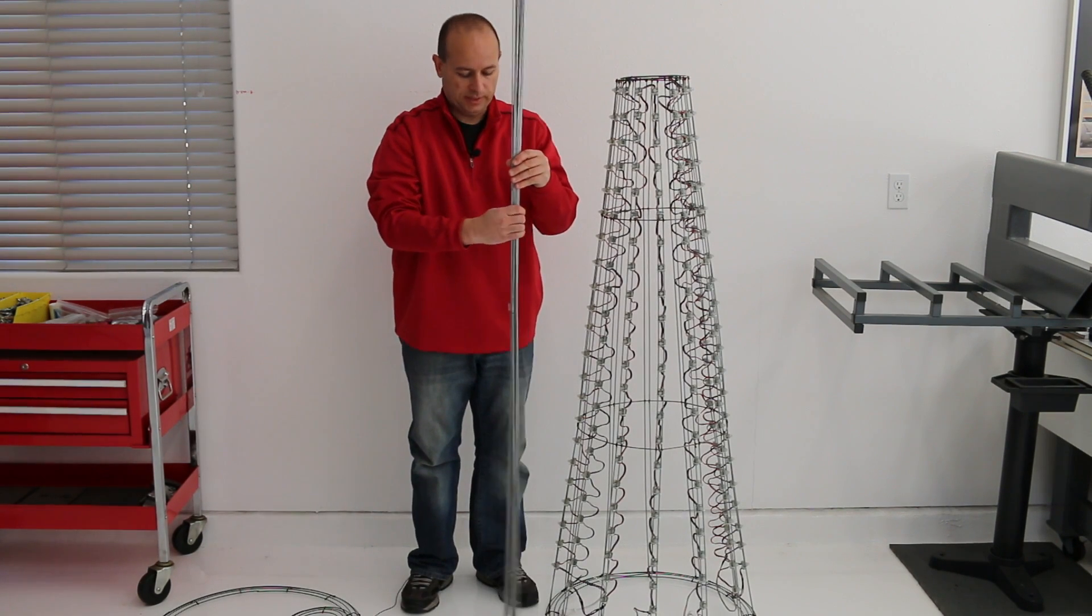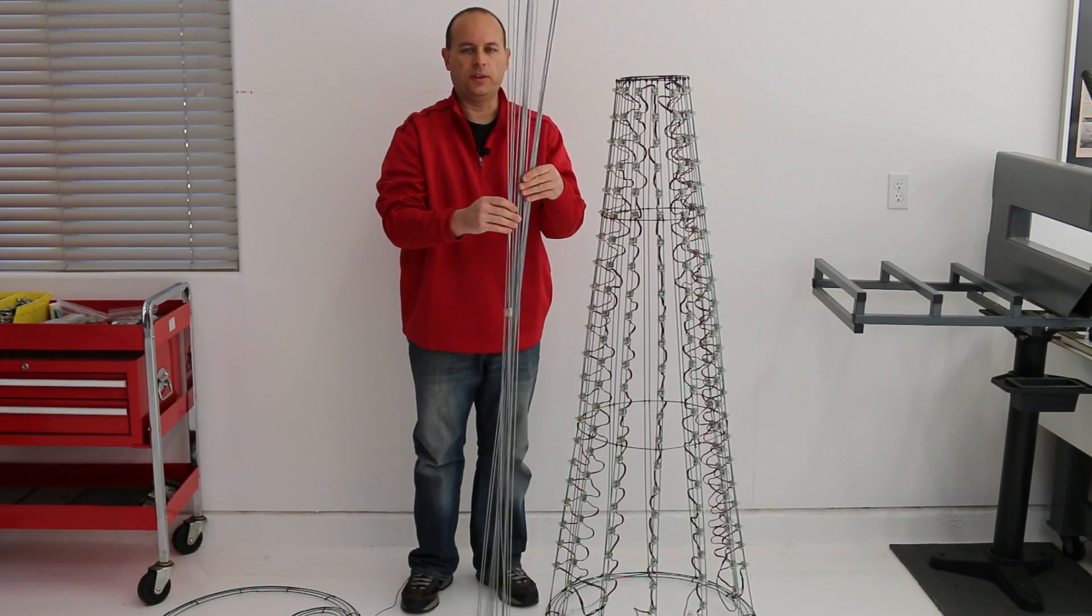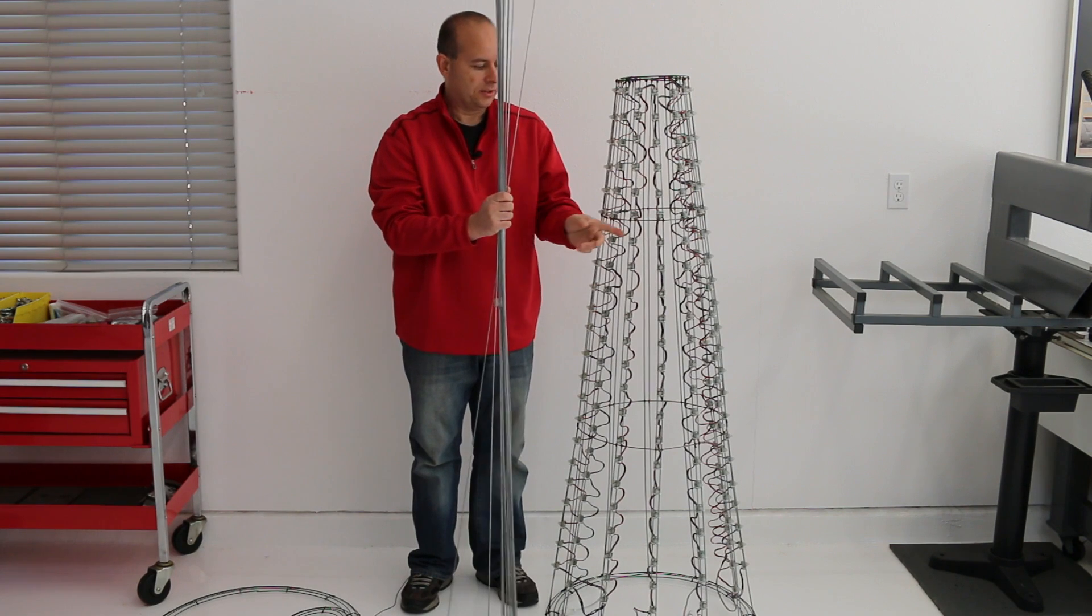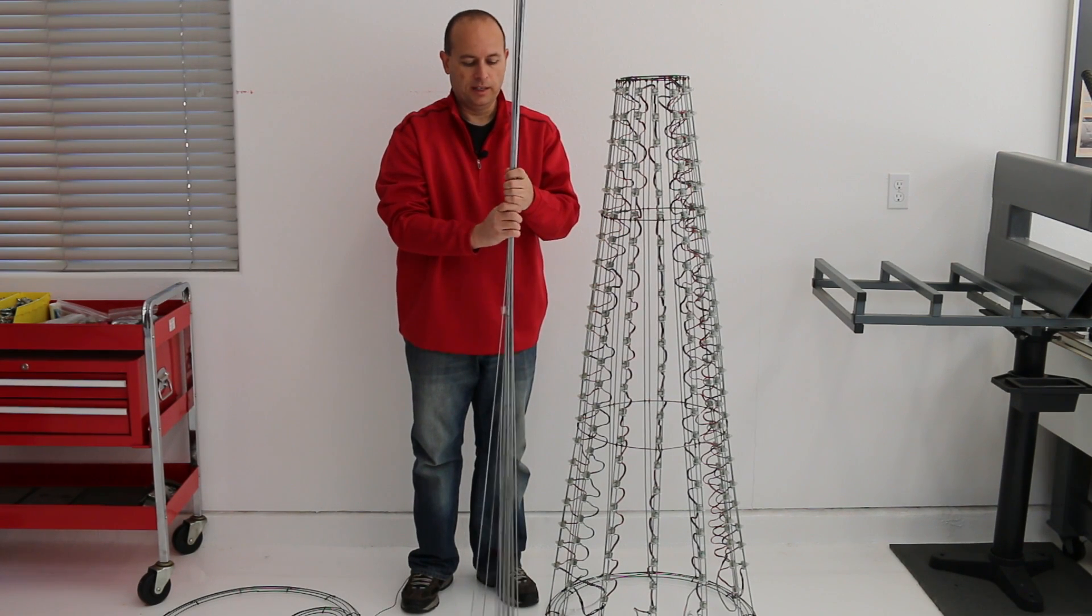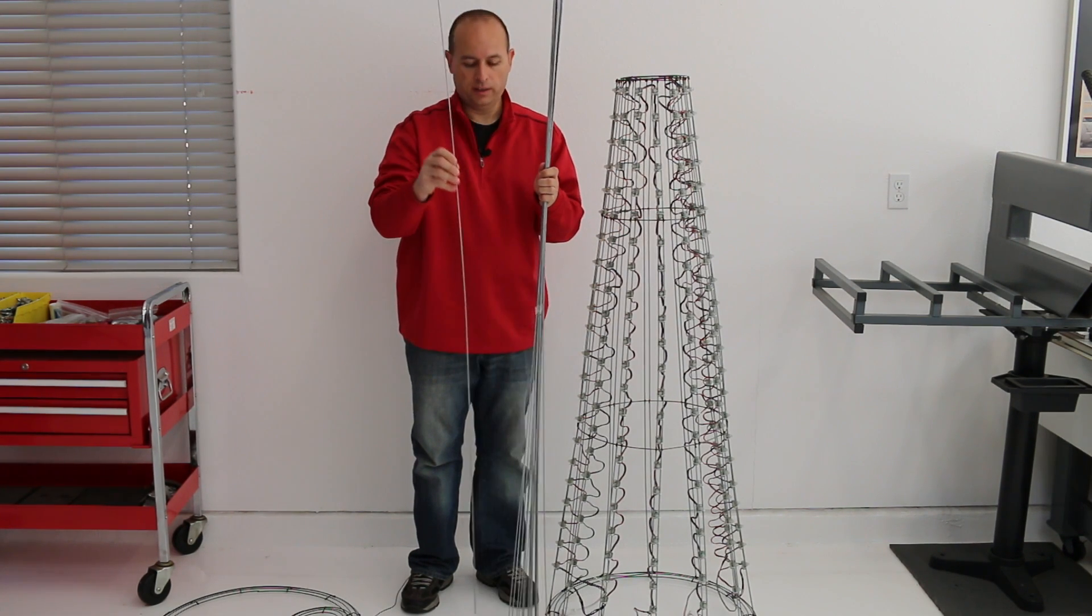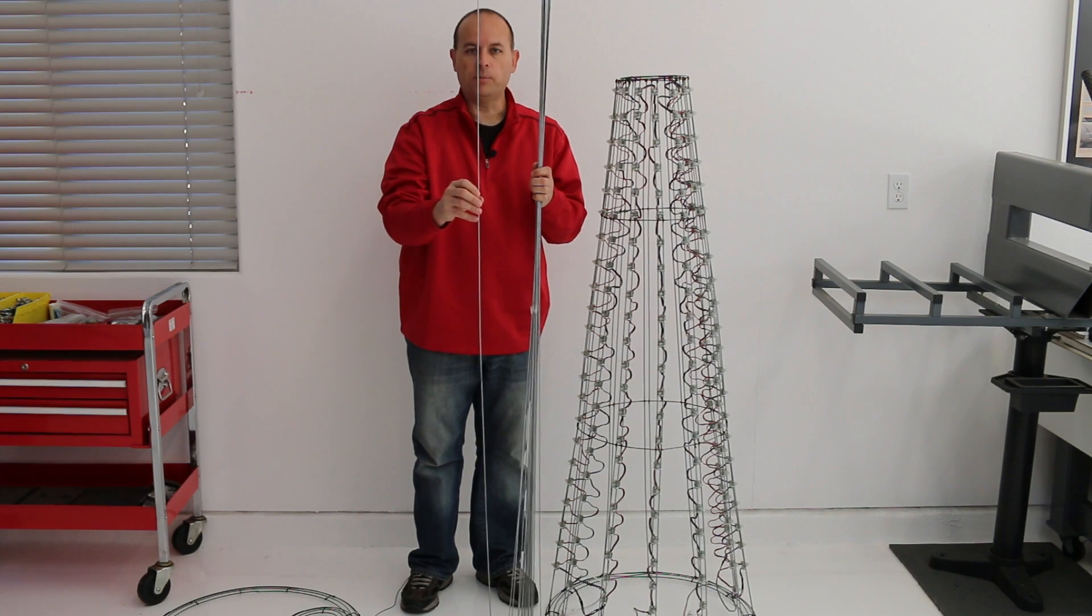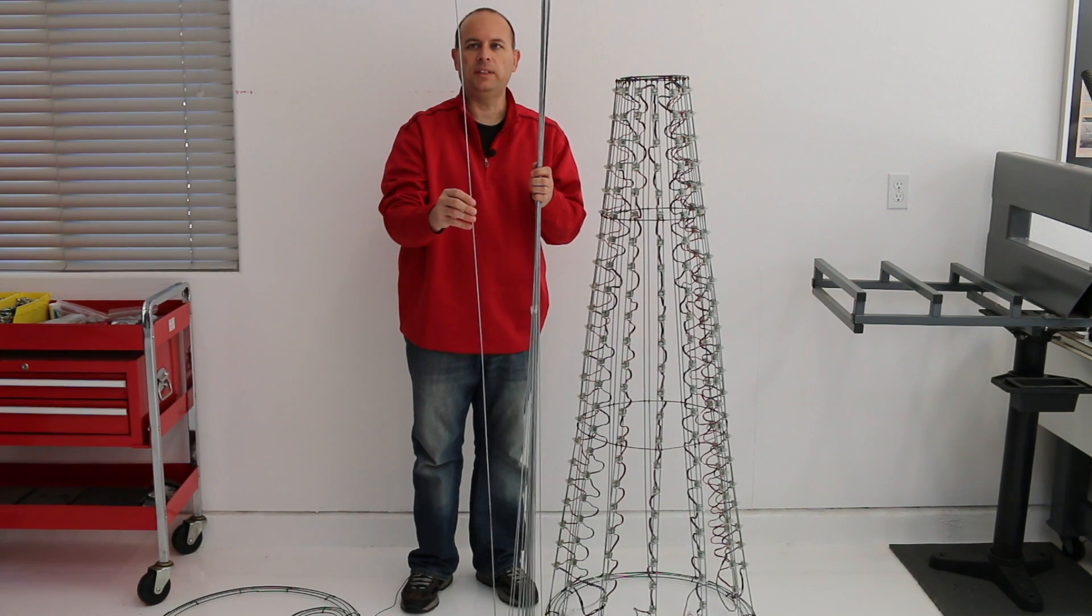Here's an example of some of the rods that are used for the vertical members to hold the pixels in place. As I said before, at Home Depot, you can buy these rods in a pack of 50 for $17.